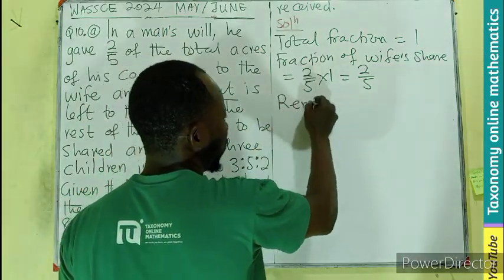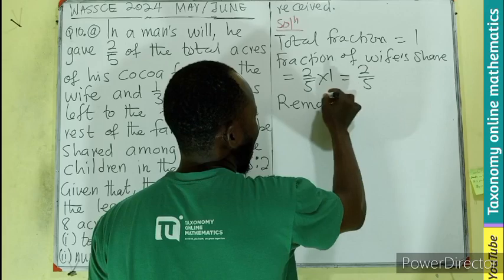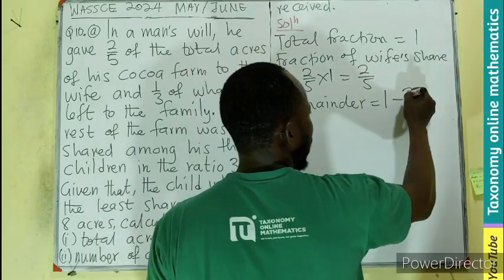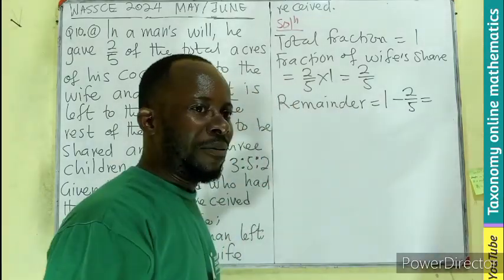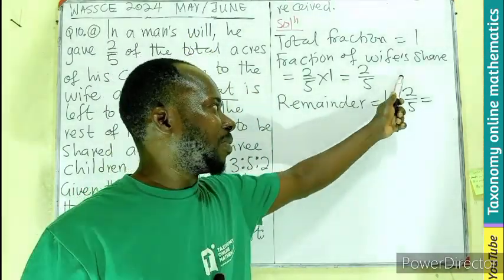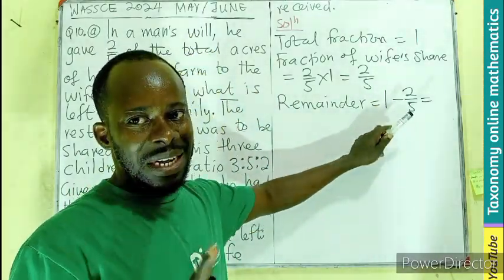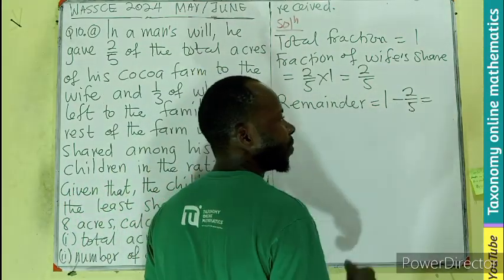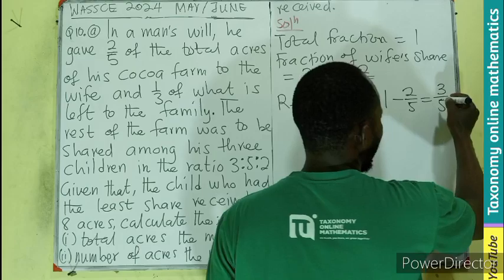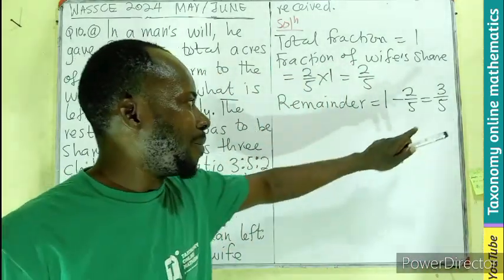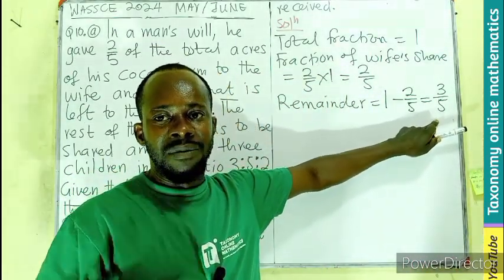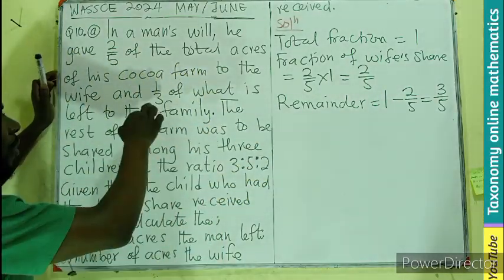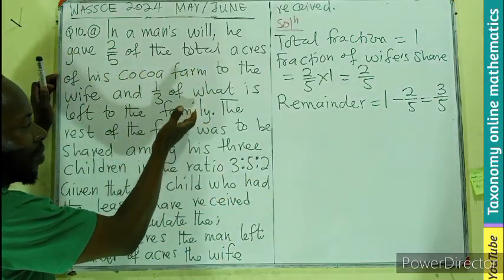Then, remainder, what will be the remainder of the acre? Since total is 1, and I'm giving two-fifths to the wife, what will be left will be, when you are subtracting a fraction from 1, just look for a number you add to the numerator to get a 5. And that number is 3. So I'll have 3 out of 5. So this is the remainder of the farmland, acres of land. That will be shared now for what? Between the family and the children.